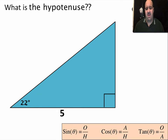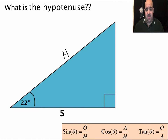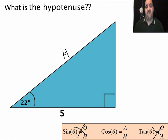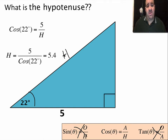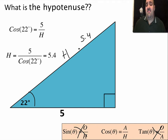Another problem: what is the hypotenuse? Same angle of 22 degrees, but this time we know the adjacent side is 5. We don't know the opposite side, so we can't use sine. We use cosine: cosine 22 = 5 over h. Rearranging: h = 5 divided by cosine of 22 degrees, which gives 5.4. If your answer differs, your calculator may be in radian mode.